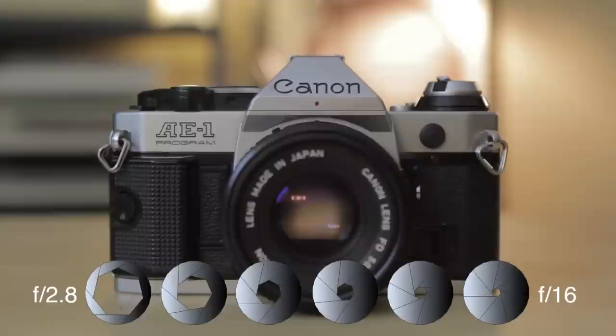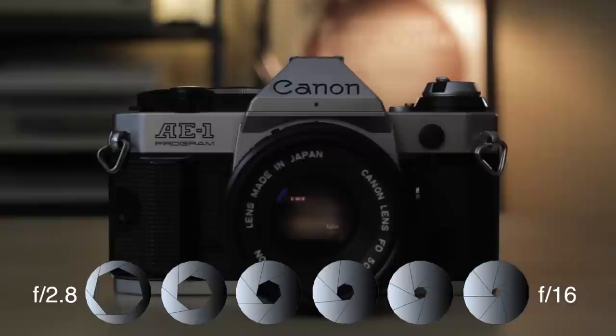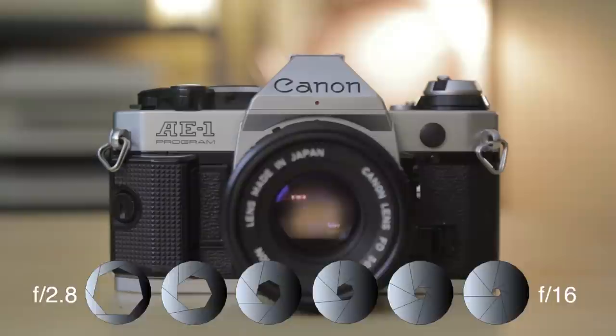This affects your final image two main ways. The first being exposure or brightness. You can see as I close down the aperture, the image gets darker and as I open it back up, the image gets brighter.